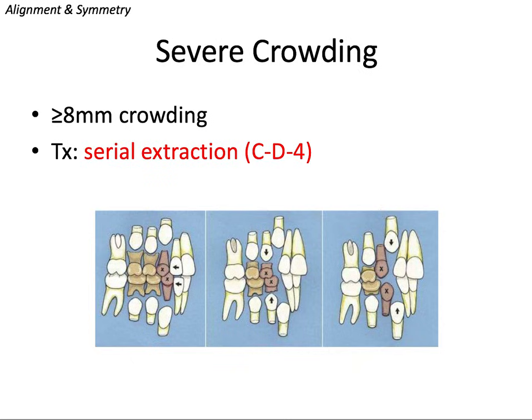For severe crowding — greater than or equal to 8 millimeters — we consider serial extraction, which refers to the consecutive removal of primary teeth to facilitate the unimpeded eruption of permanent teeth. It's indicated with 8 to 10 millimeters or more of crowding, where the patient typically has large teeth and a small mouth with laterals touching primary first molars. This is contraindicated if the patient has a significant skeletal class two or three, or if crowding is only mild or moderate. The process starts around the time of permanent lateral incisor eruption, when it becomes clear things really are not going to fit.